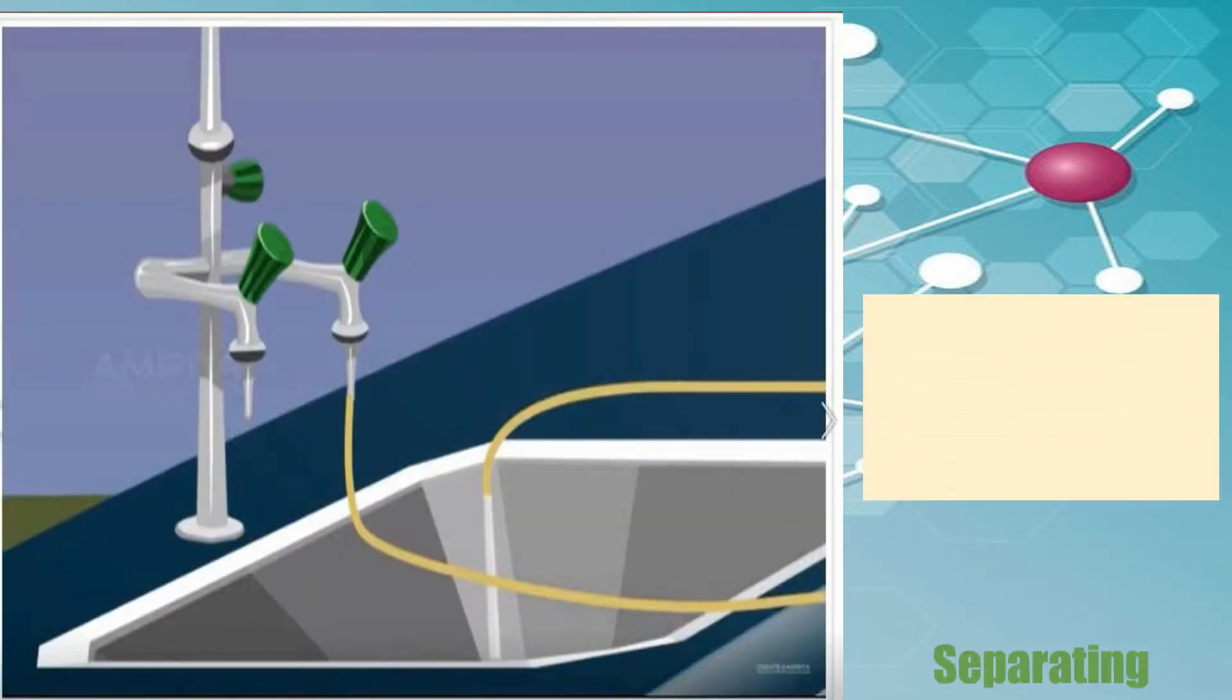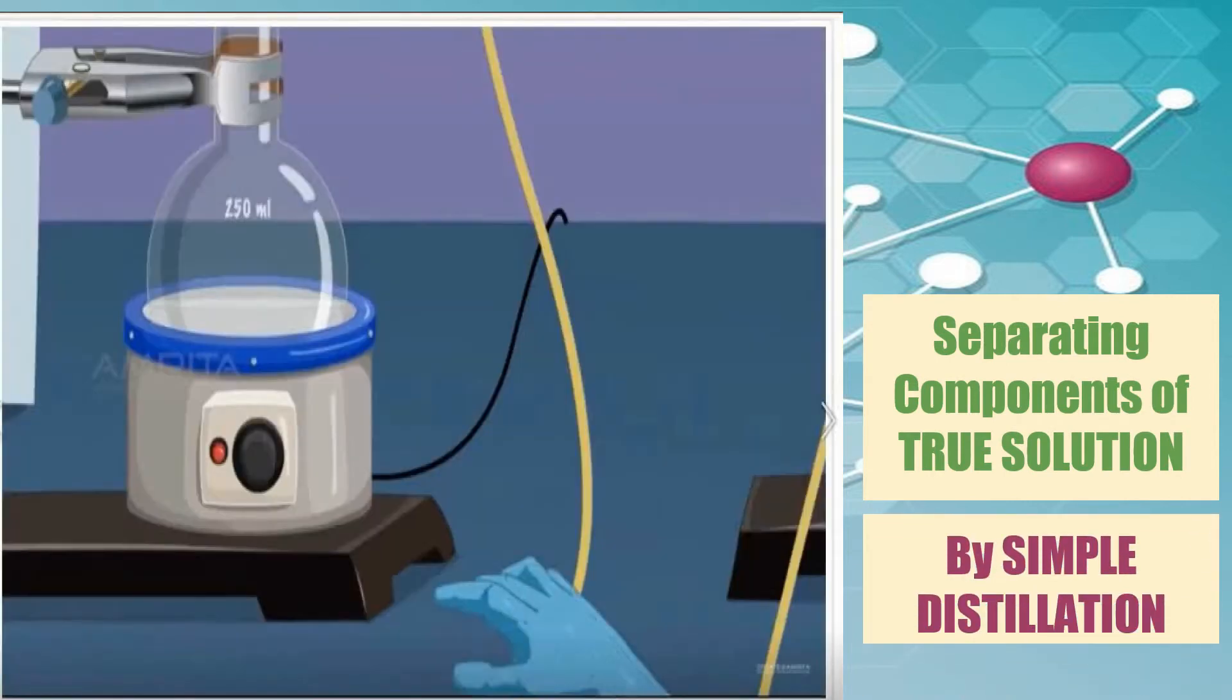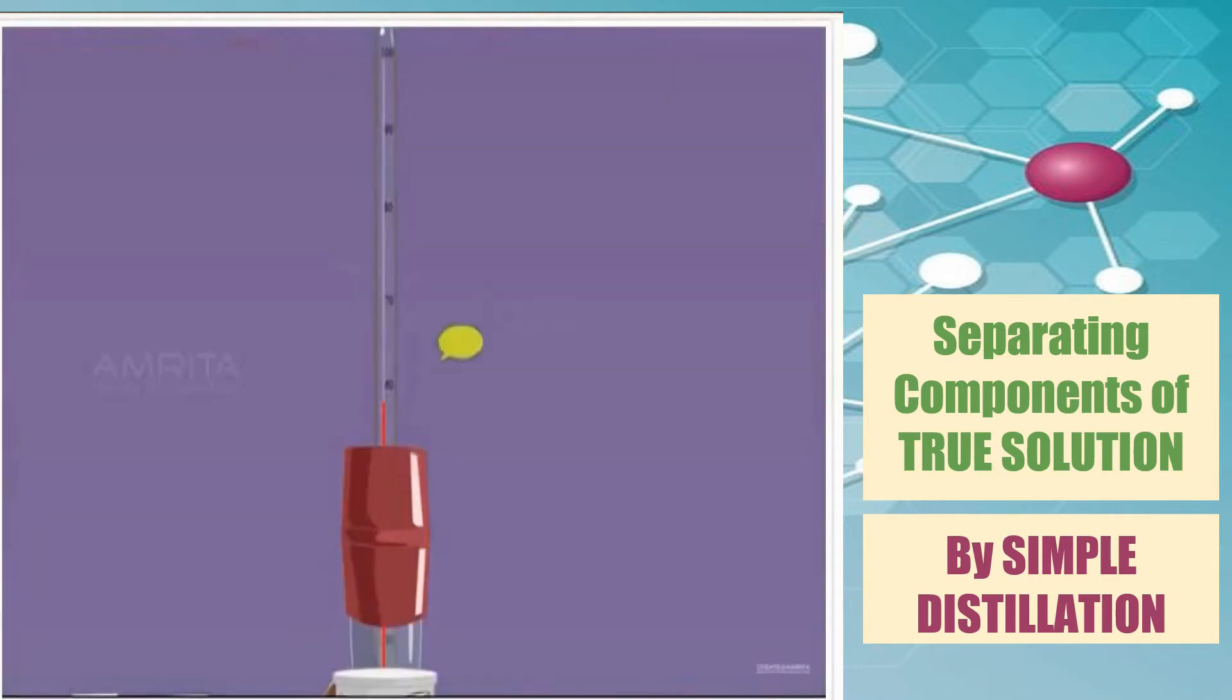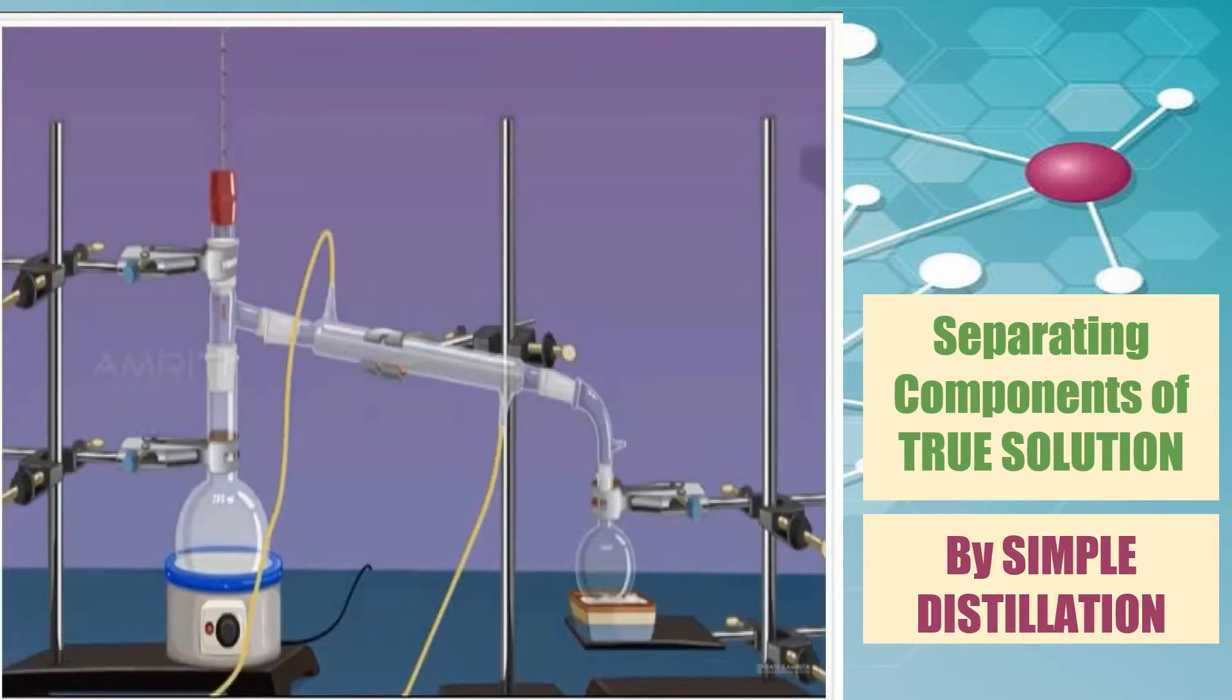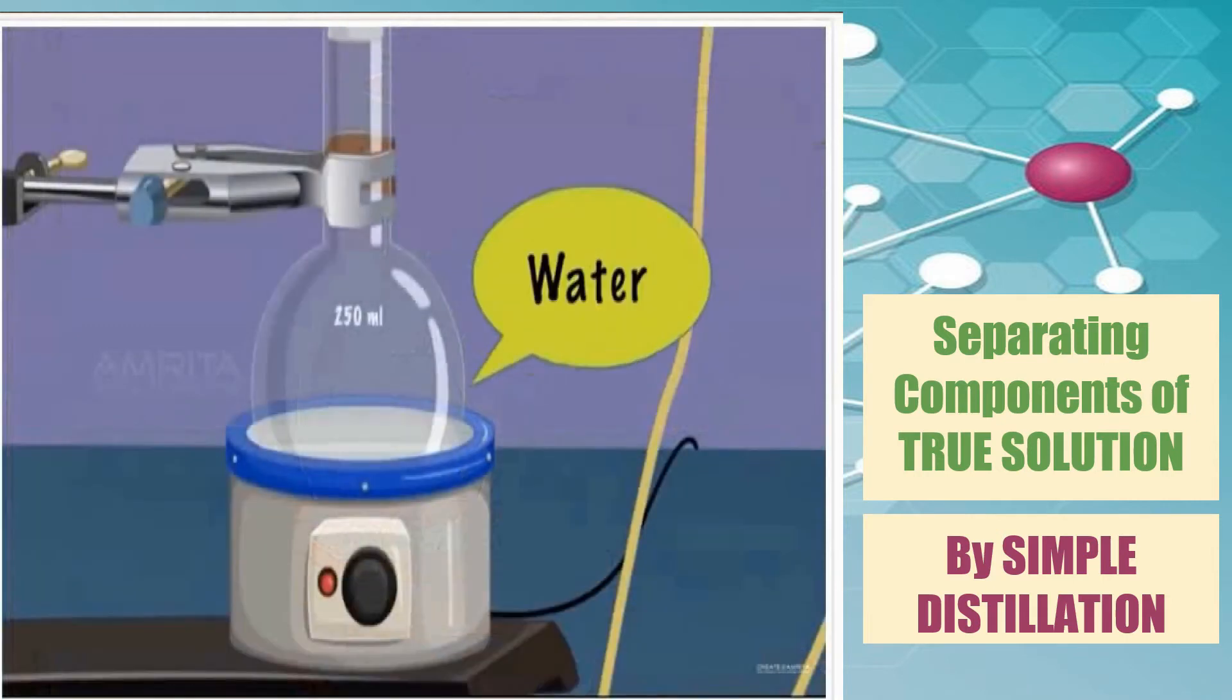We will watch how acetone is recovered from acetone and water mixture by simple distillation. Here, the heating mantle is set to 56 degrees Celsius because acetone boils at 56 degrees Celsius. While the temperature rises to 56 degrees Celsius, acetone boils and evaporates and will be condensed. And the condensed acetone will be recovered in another RB flask while the water remains in another RB flask.